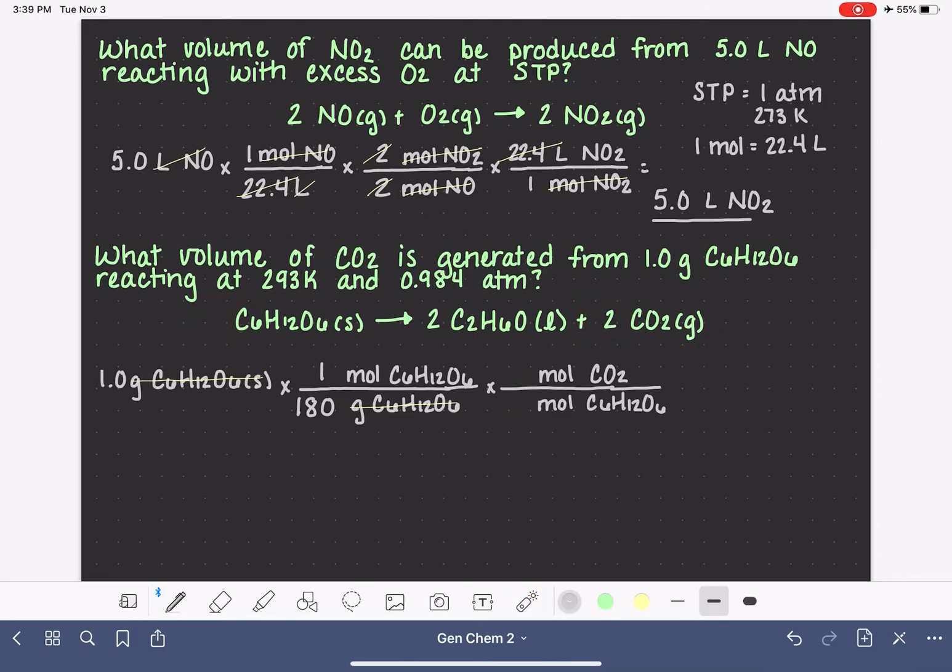The mole-to-mole relationship is the stoichiometric coefficients in the balanced equation. So we have one mole of C6H12O6, two moles of CO2. And in that step, we are canceling out moles of C6H12O6. And at this point, this is where we actually want to kind of temporarily stop this problem.